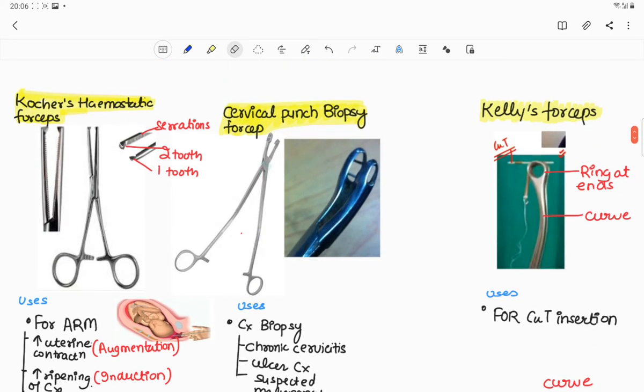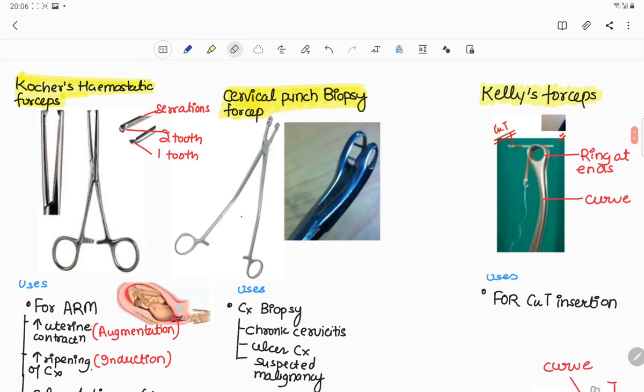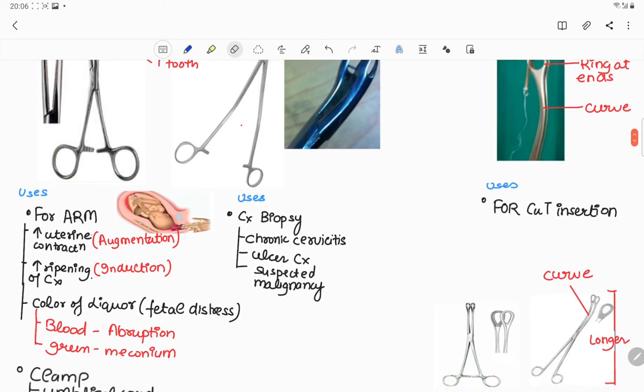Tenth is cervical punch biopsy forceps and it is used to take cervical biopsy. Indications of cervical biopsy are chronic cervicitis, ulcer on the cervix, or any suspected malignancy.